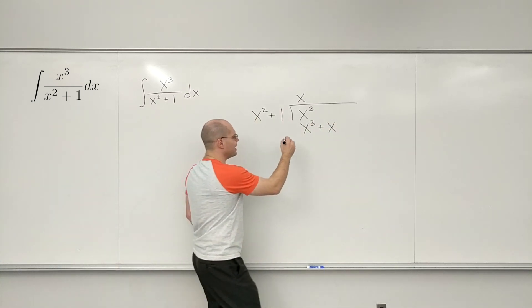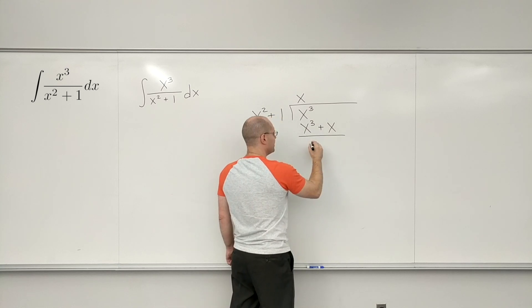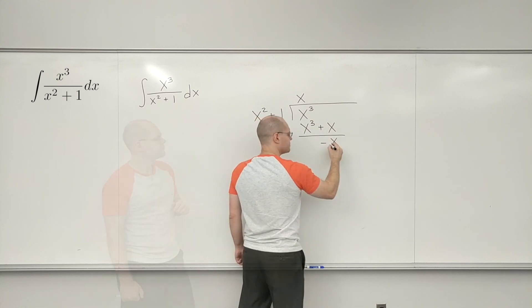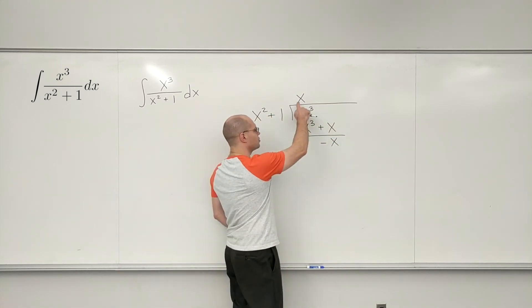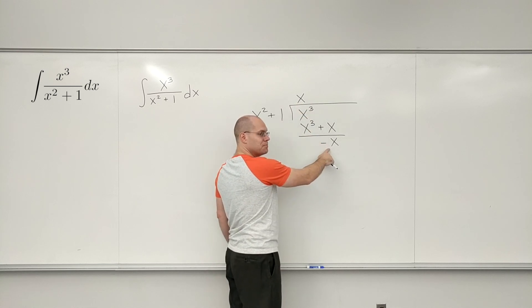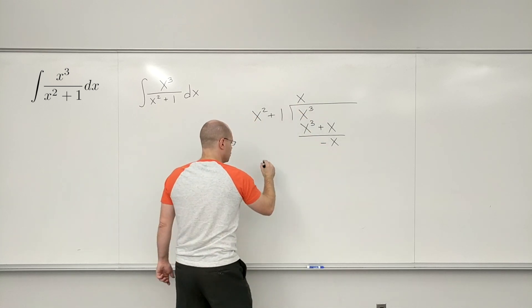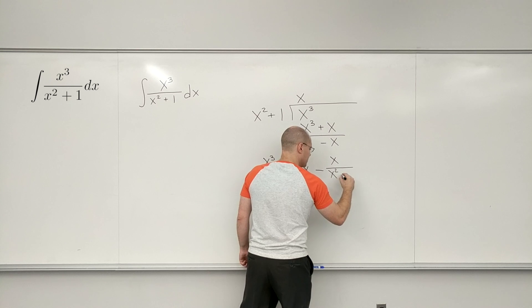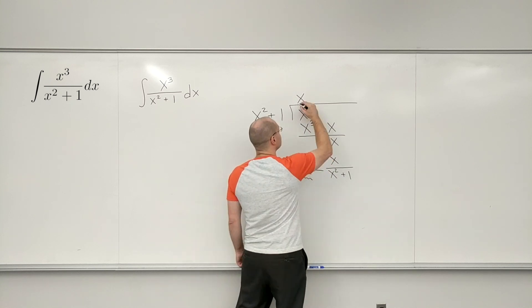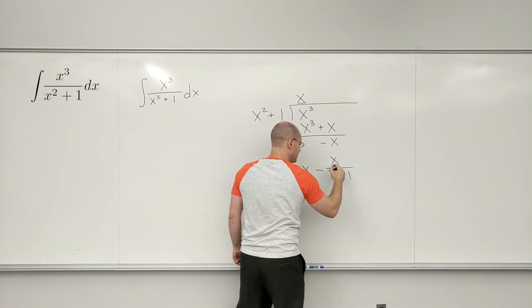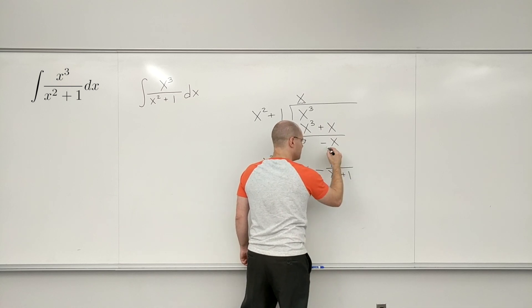And then you subtract one from the other, and you get minus x. Okay, so this is the quotient, and this is the remainder. This is the quotient, and this is the remainder.